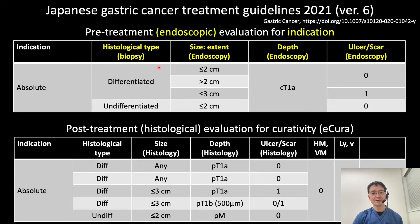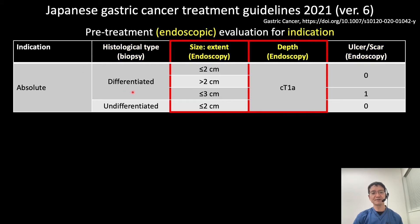To determine the indication of endoscopic treatment or surgery, we have to evaluate four findings by endoscopic findings: histological type, tumor size, tumor depth, and presence of ulcer or scar. Histological type is usually determined by histological examination of biopsy specimen. Here I am talking about how to make diagnosis of tumor extension, size, and tumor depth in this presentation.